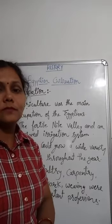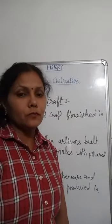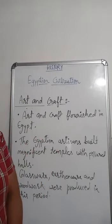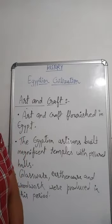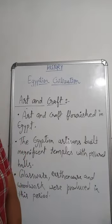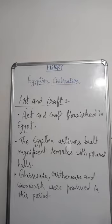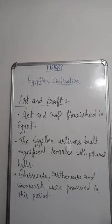Art and craft: Egyptian people were very skilled in craft and art. Art and craft flourished in Egypt during this period. Egyptian artisans built magnificent temples with pillared halls. Glassware, earthenware, and woodwork were produced, and the walls of tombs and temples were decorated with realistic and beautiful paintings depicting the social life of Egyptians.